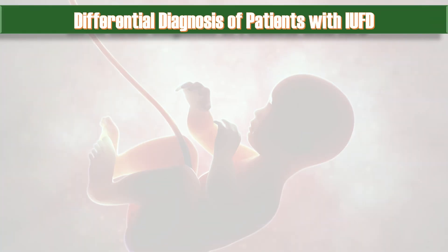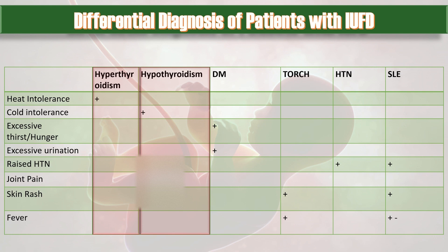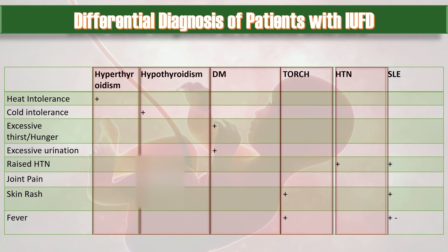The differential diagnoses in a patient with IUFD include: heat intolerance suggesting hyperthyroidism, cold intolerance indicating hypothyroidism, excessive thirst, hunger, and excessive urination pointing to diabetes mellitus, raised blood pressure in a patient with previous or current hypertension, and joint pain, skin rash, and fever indicating SLE.